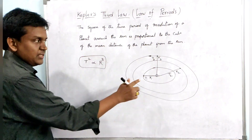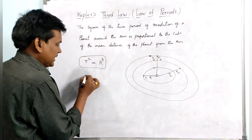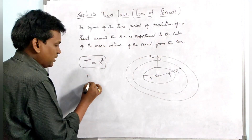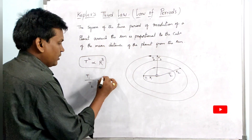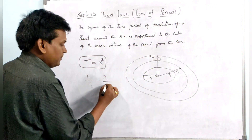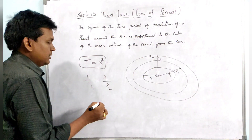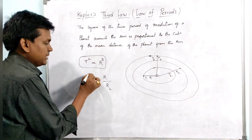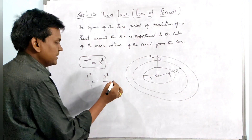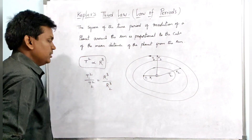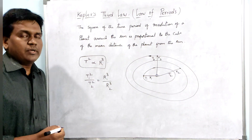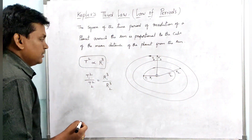If you consider two planets, then T1 squared divided by T2 squared is equal to R1 cubed divided by R2 cubed. So T squared is directly proportional to R cubed.